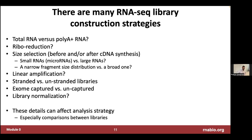One thing you still commonly see is an option for poly-A selection of the RNA before sequencing. That's an important distinction whether it's being done or not. If it is being done, it's more important that your RNA be really intact, because you're priming off the poly-A end of all your RNA molecules. If your RNA is degraded, you might be missing all the five-prime ends past the point where the breaks happen, so you can wind up with data that's quite biased towards the three-prime end of your transcripts. You're also not getting the non-polyadenylated RNA, some of which may be of interest.